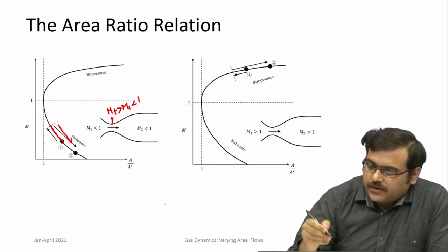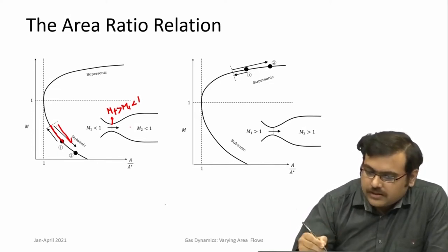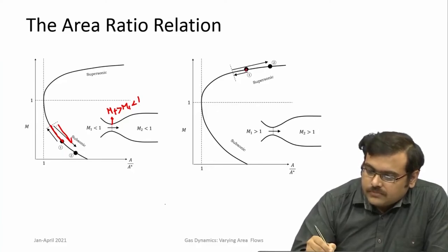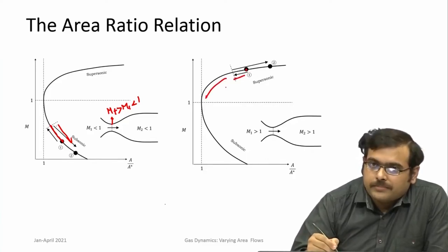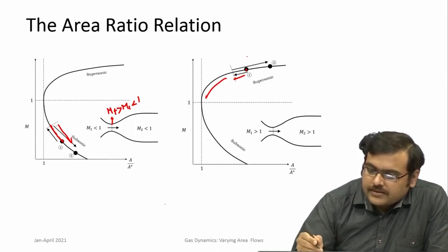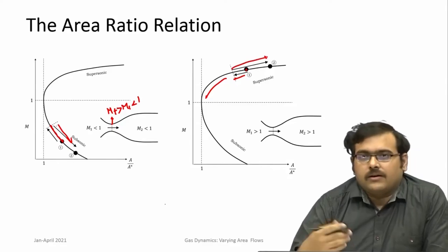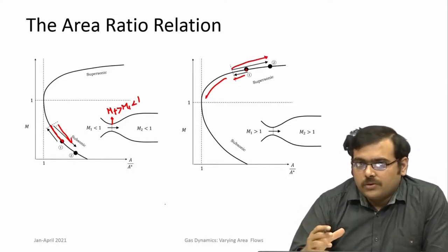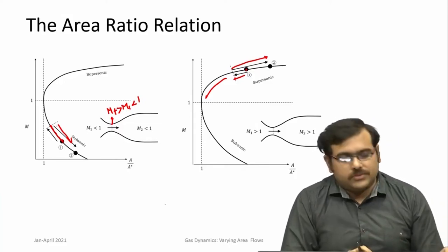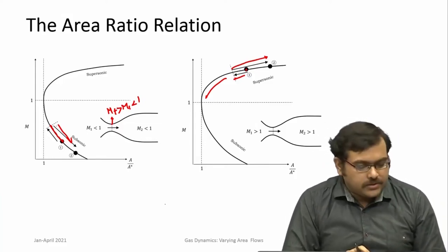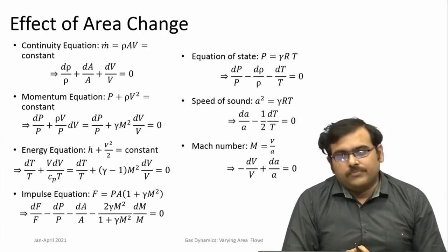Similarly, in supersonic flow you could start with supersonic flow in a convergent duct where Mach number decreases but does not decrease all the way to 1, and then as area increases the Mach number increases again. So when looking at varying area ducts you have to be careful and understand these concepts very carefully.